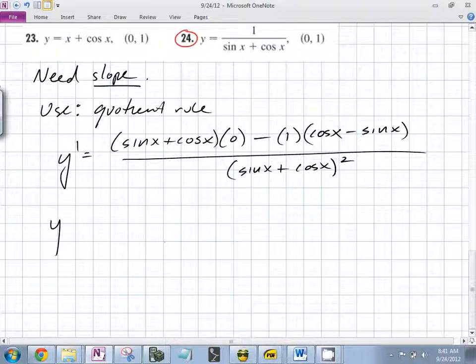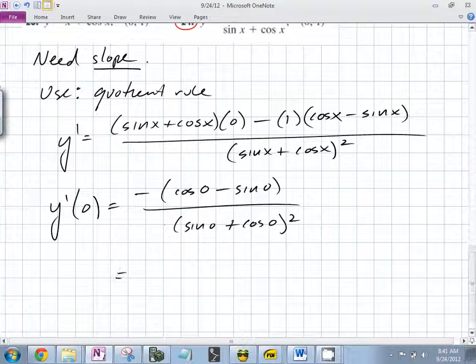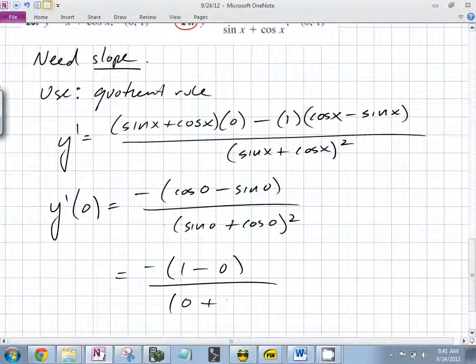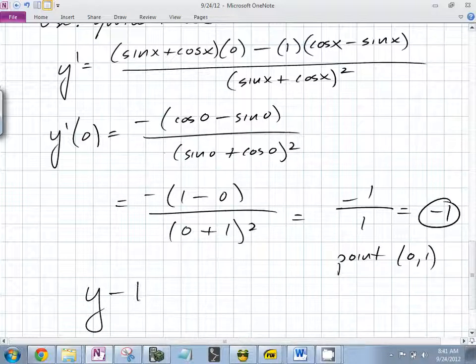What are we plugging in? Y prime evaluated at? We want the slope, so we plug in zero. So you end up with negative cosine zero minus sine of zero all over sine zero plus cosine zero squared. What's cosine of zero? What's sine of zero? So what do we end up with? Negative one over one, which is negative one. So there's our slope. What was our point? Zero, one.